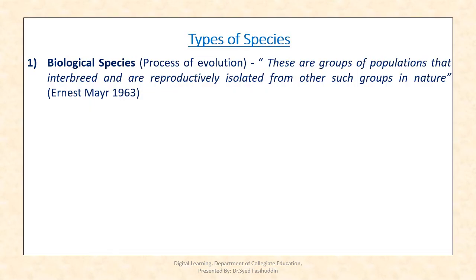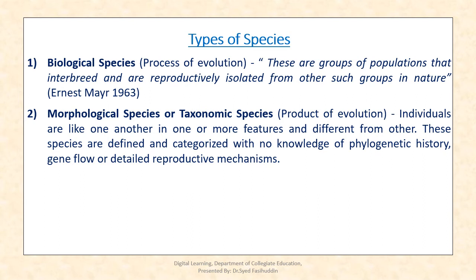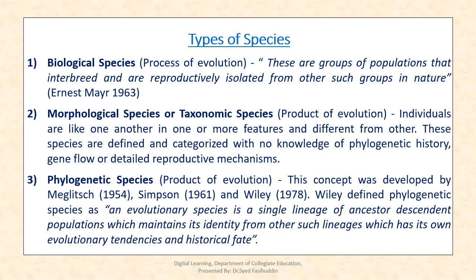Types of species: the first is biological species — groups of populations that interbreed and are reproductively isolated from other such groups in nature. The second is morphological species or taxonomic species — individuals are like one another in one or more features and different from others; these are defined with no knowledge of phylogenetic history, gene flow or reproductive mechanisms. The third is phylogenetic species, defined as an evolutionary species — a single lineage of ancestor-descendant populations which maintains its identity from other lineages and has its own evolutionary tendencies and historical fate.